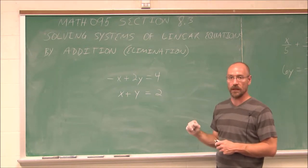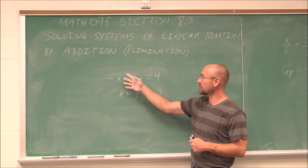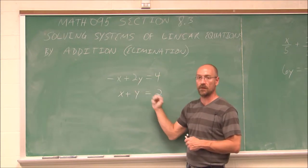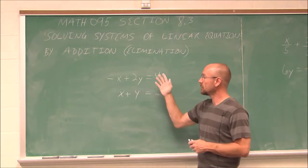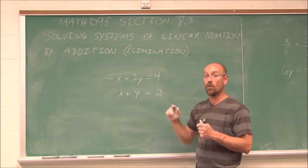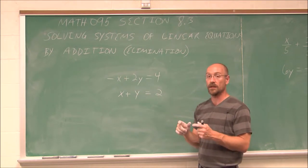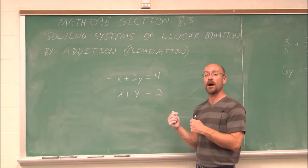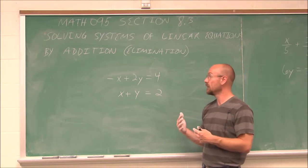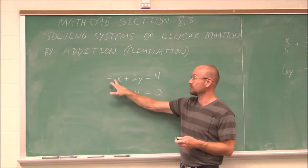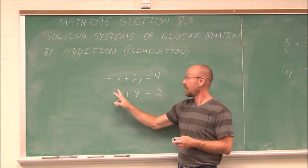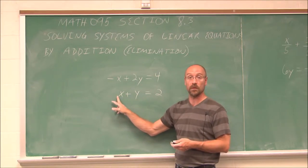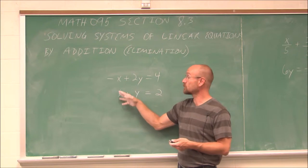Now, in order to use the elimination method, we have to look at the coefficients of our variables. To use the method, we want our coefficients to be the same value but of opposite signs. So we want them, as an example, if this is negative 1, I want my other coefficient to be positive 1. And that's what we have here.